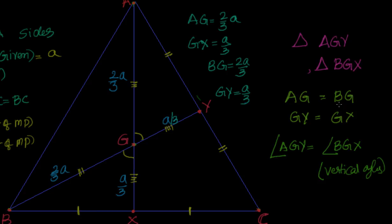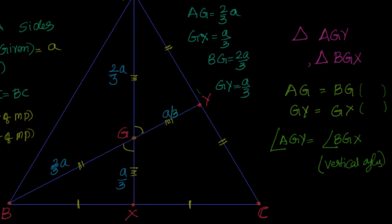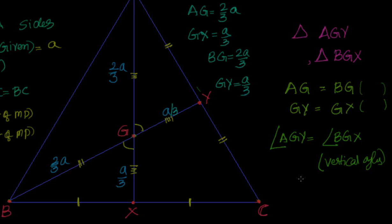So AG equal to BG and GY equal to GX. This is due to the property of centroid. The centroid divides the medians in the ratio 2 is to 1. Now we have proven that by SAS, triangle AGY is congruent to triangle BGX.